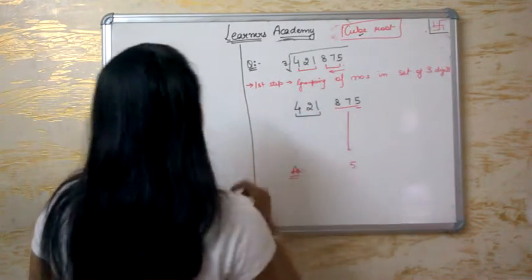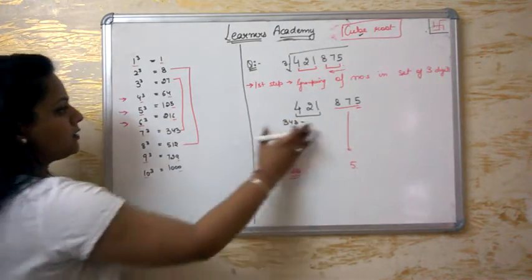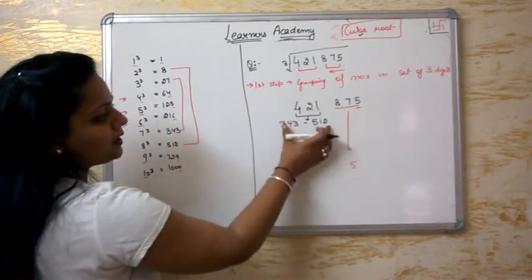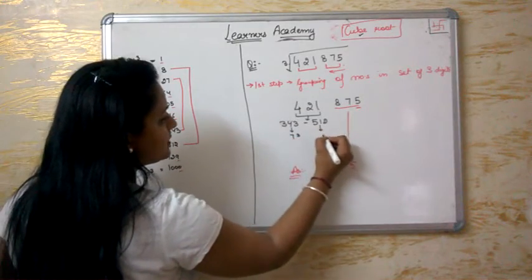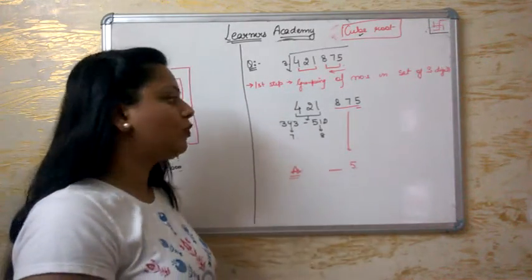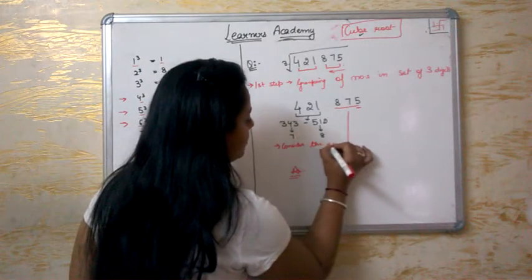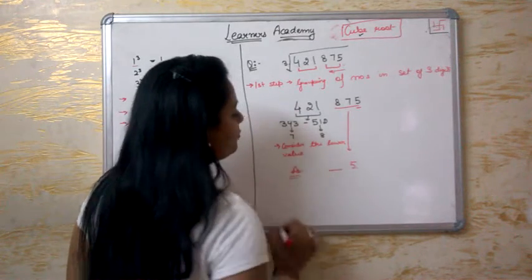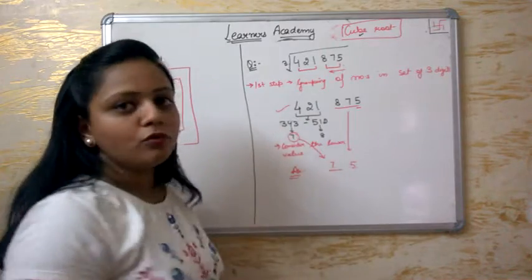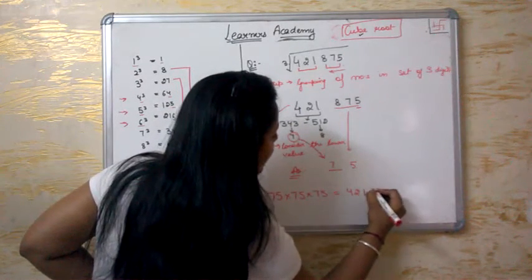Now, 421 — between whose cubes does it fall? 7 cubed is 343 and 8 cubed is 512. So this number lies between these two limits. This is 7 cubed and this is 8 cubed. So you have two options. What we will do? We will take the lower one. Always consider the lower value. So the answer is 75. That means if you multiply 75 three times, you will get 421875.